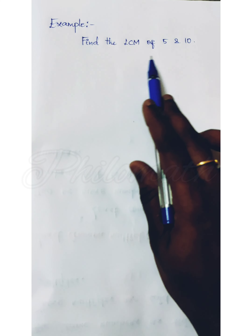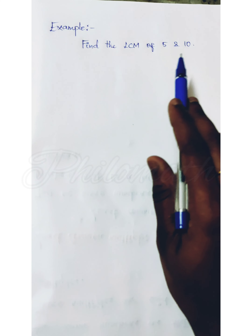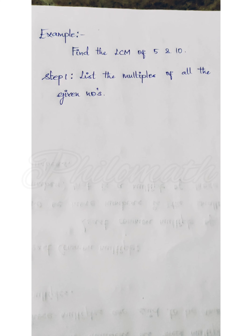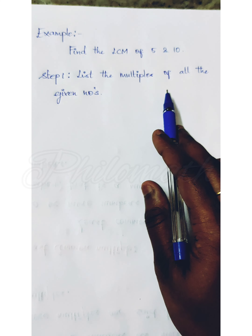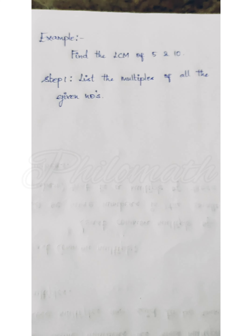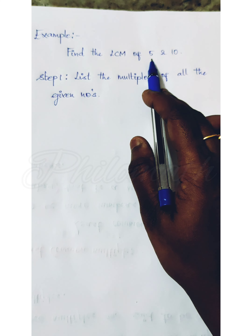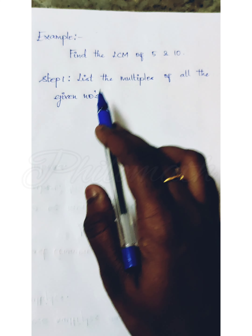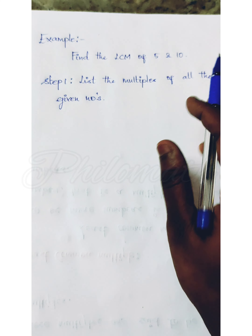Find the LCM of 5 and 10. We'll follow a three-step process to find the LCM. Step one: list the multiples of the given numbers. The given numbers here are 5 and 10.